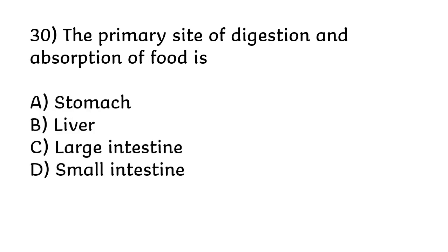The primary site of digestion and absorption of food is: stomach, liver, large intestine, or small intestine. The correct answer is option D, small intestine.